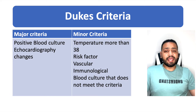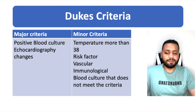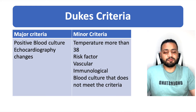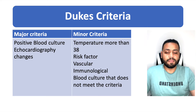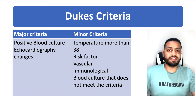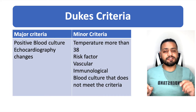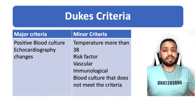Minor criteria include many things. Fever more than 38.5 degrees is one of the minor criteria, along with predisposing factors, vascular problems, and immunological problems. Vascular issues include arterial emboli, Janeway lesions, and conjunctival hemorrhage. Immunological problems include glomerulonephritis, Roth spots, and Osler's nodes. Positive blood cultures that did not meet the major criteria — not persistently positive 12 hours apart or three cultures one hour apart — also count as minor criteria.